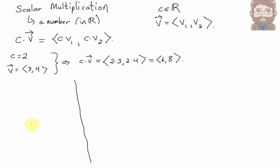Now there's an important way to think about scalar multiplication geometrically, just as there was with vector addition in the parallelogram law. Scalar multiplication has another interpretation as well. Let's say this is the vector V, the vector 3, 4.